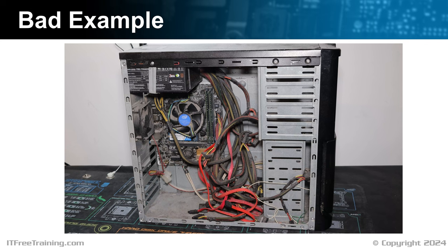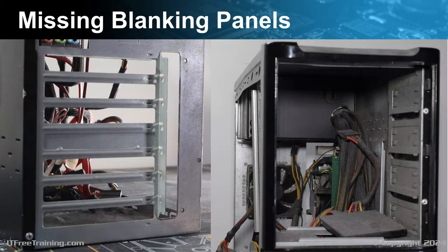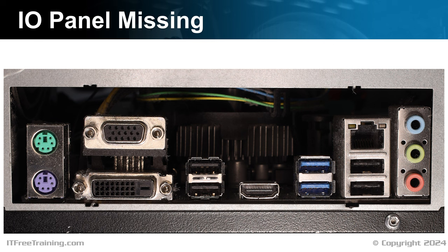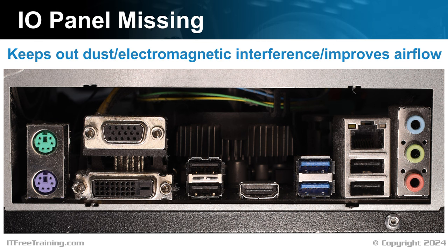Inside the computer case is a thin layer of dust. Dust gets in everywhere, so when using the computer, you want to put the side cover on. This computer also has a lot of missing blanking panels at the front and back of the case. Missing blanking panels disrupt the airflow, reducing the cooling effectiveness and increasing the amount of dust inside the computer. It is important to replace any missing blanking panels. Also missing is the I/O panel, which helps to keep out dust, avoids electromagnetic interference, and improves airflow. It is important to keep cooling effective by installing I/O panels and blanking panels.